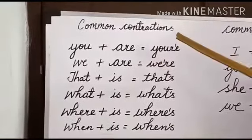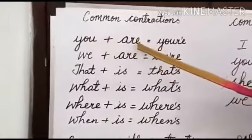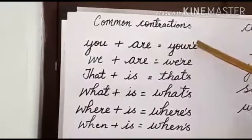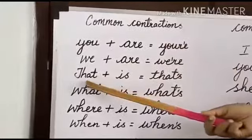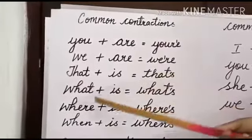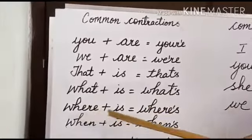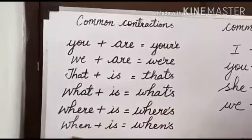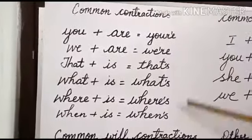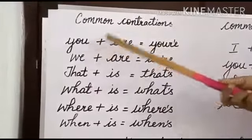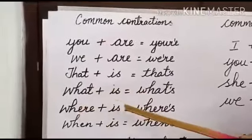Let us look into some common contractions. You have to simply remove the first letter of the second word and replace it with an apostrophe. For example: 'you' plus 'are' = 'you're', 'we' plus 'are' = 'we're', 'that' plus 'is' = 'that's', 'what' plus 'is' = 'what's', 'where' plus 'is' = 'where's', 'when' plus 'is' = 'when's'.